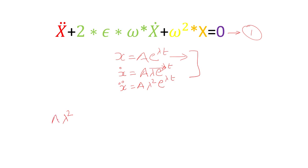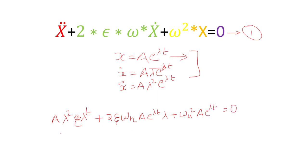Substituting gives: Aλ²e^(λt) + 2ζω_n · Aλe^(λt) + ω_n² · Ae^(λt) = 0. Since Ae^(λt) is common to all three terms, we factor it out, yielding the characteristic equation: λ² + 2ζω_n λ + ω_n² = 0.